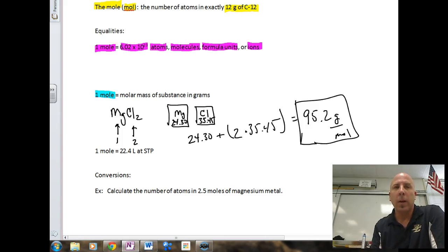We're going to run that through our calculator, and I get 95.2 grams per mole as our molar mass, or also sometimes called formula mass, of magnesium chloride. We can use that as a conversion factor, and we will soon here.